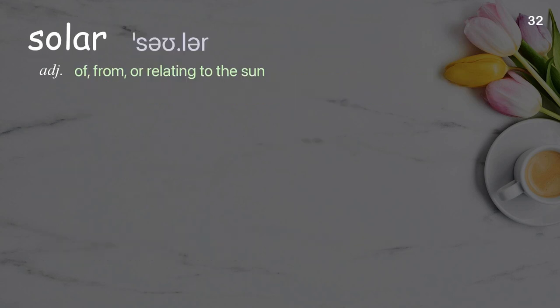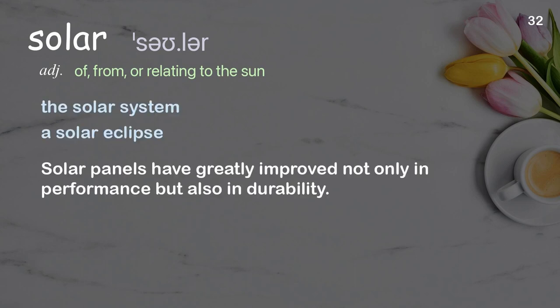Solar: Of, from, or relating to the sun. Examples: The solar system. A solar eclipse. Solar panels have greatly improved not only in performance, but also in durability.